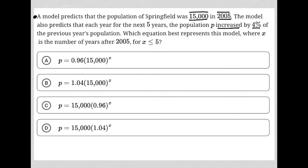2005 was mentioned up here. If X is the number of years after 2005, that means in 2005, X was equal to 0. That's important to know. So for X ≤ 5, we're not getting too far beyond five years after 2005.